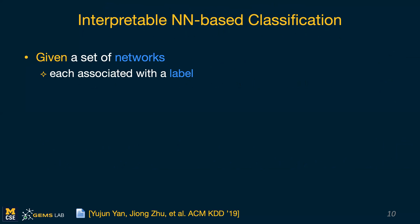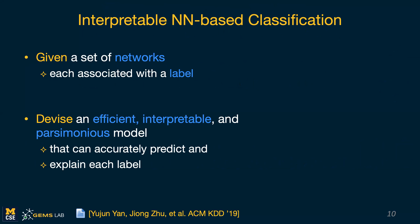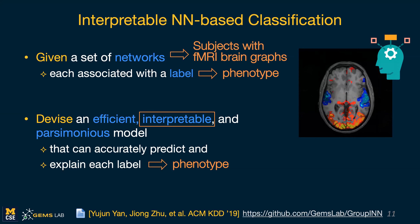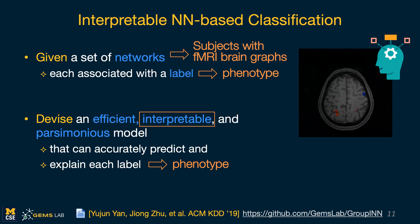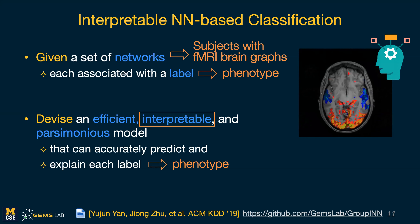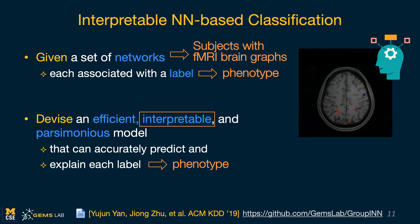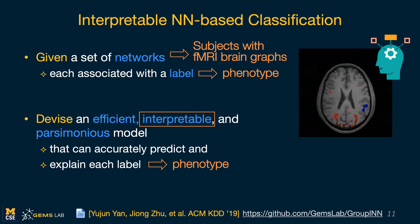I'll start with the first direction and set up the problem, which is neural network based classification. Imagine we are given a set of networks, each network has an associated label, and what we want to do is come up with an efficient, interpretable, and parsimonious model that can accurately predict this label and also explain why it's making this prediction. This is motivated by an application in neuroscience — we have several subjects, for each subject we have their fMRI-based brain graphs, and we want to classify these brain graphs to predict a phenotype, for instance cognitive or intellectual ability of these subjects.